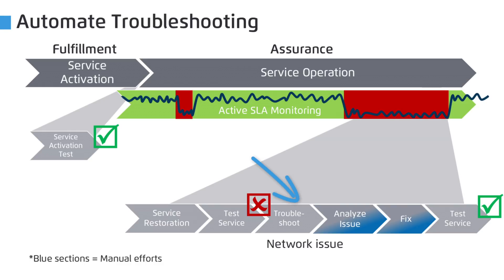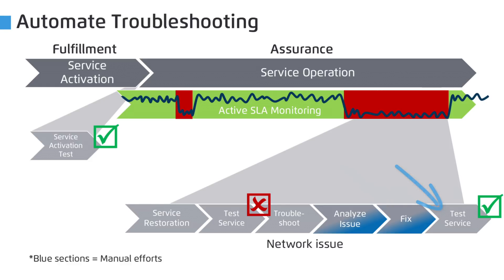NSO triggers an advanced troubleshooting test template in NetRounds. This troubleshooting test will utilize reflection technology to sectionalize the problem and pinpoint in which network layer and measured KPI we have a problem. That generates a detailed report distributed to stakeholders such as a network engineer, who can then fix the problem. When the engineer closes the ticket, a NetRounds activation test is again run to verify the service is restored.